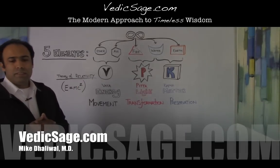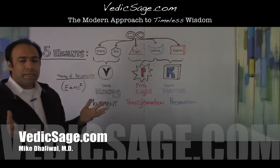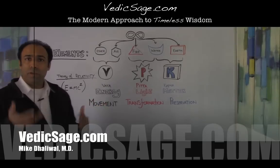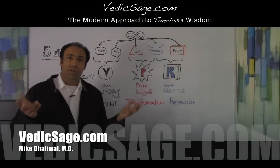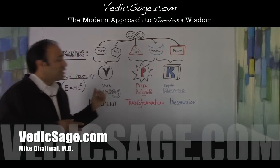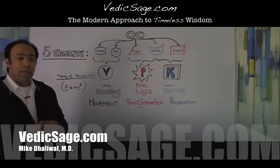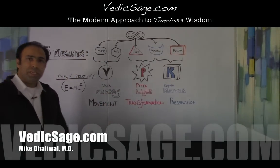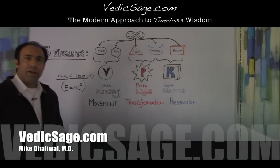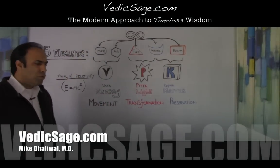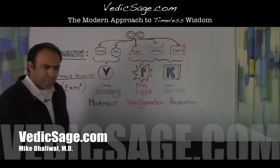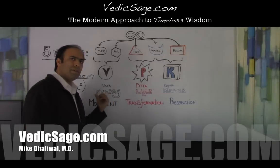alveolar ventilation, is vata. The cardiac circulation taking place — the movement of blood through the vessels — is also vata.